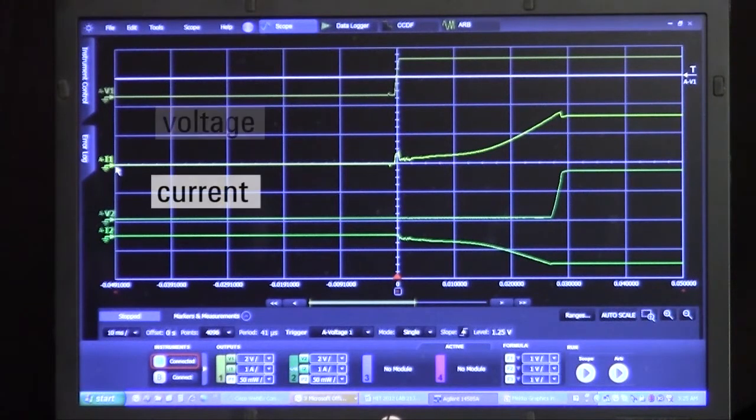The second trace here is the current being pulled out of channel one and you can see here at the time when the DC to DC converter power is applied, the current begins ramping up until the output is turned on. Now this is a unique capability of the DC power analyzer, the fact that it can measure current directly via a scope trace.